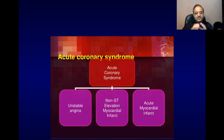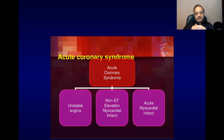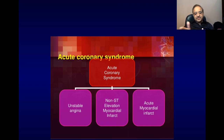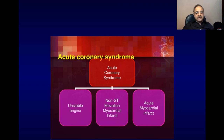So if the patient has severe chest pain which is longer, unusual, and lasts for more than 20 minutes, he should call an ambulance and be shifted to the hospital for treatment. These are the three different conditions which fall under the category of acute coronary syndrome.